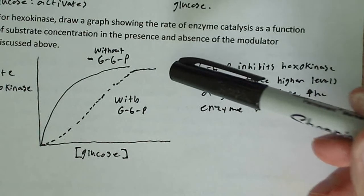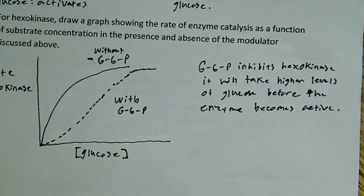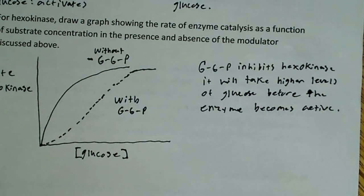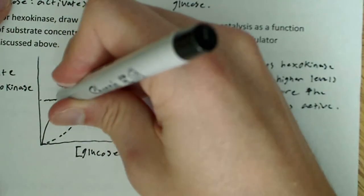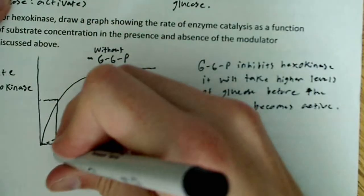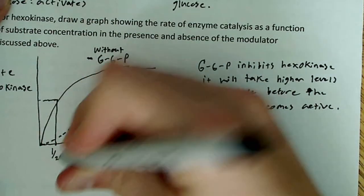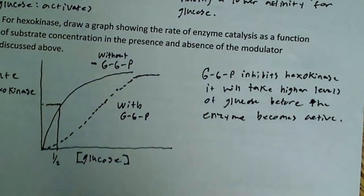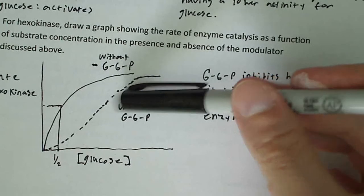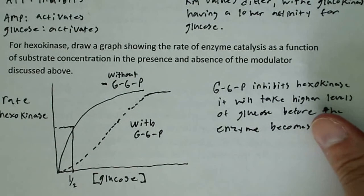So it's hyperbolic when there's no glucose 6-phosphate, and it's more sigmoidal when there is a high concentration of glucose 6-phosphate. And in the absence of G6P, hexokinase reaches that 1.5 Vmax level at lower glucose concentration. We could just arbitrarily call it right here. But regardless, it reaches, and in this case it takes longer to reach 1.5 Vmax. So that's basically what I wanted to say.